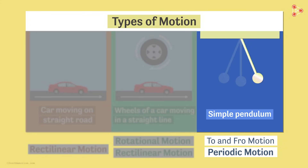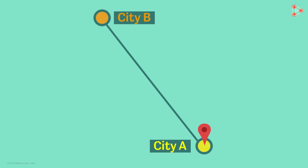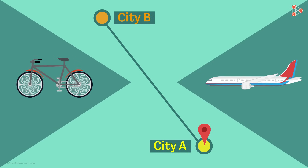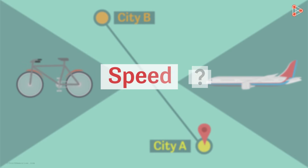Suppose you want to travel to city B from city A — which mode of transport will get you there quicker: a bicycle or an aeroplane? Obviously an aeroplane, because the speed of an aeroplane in air is much quicker than the speed of a bicycle on a road. But what is speed? Keep watching our videos to know more!